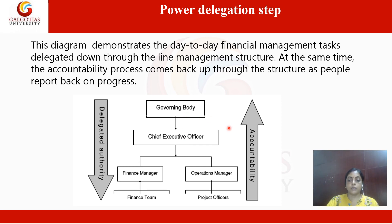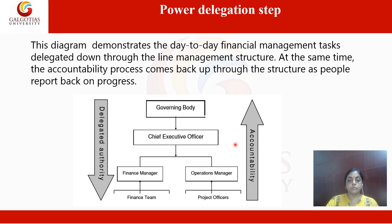When we come to accountability — where someone is answerable — it flows from the lower to upper position. The last officer in the field, the project officer, is accountable to the operational manager, who answers to the CEO, the chief executive officer, and the CEO is answerable to the governing body. So authority delegation flows from upper to lower, while accountability flows from lower to upper.